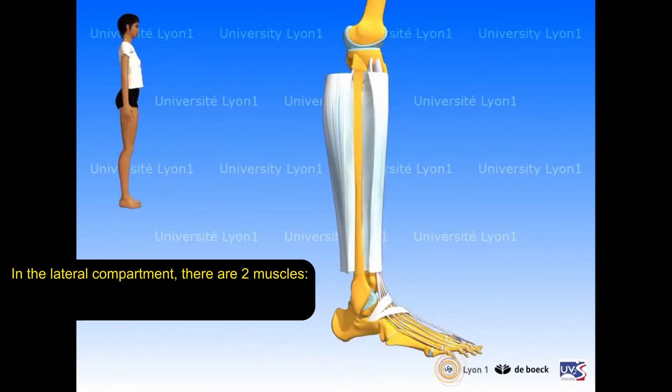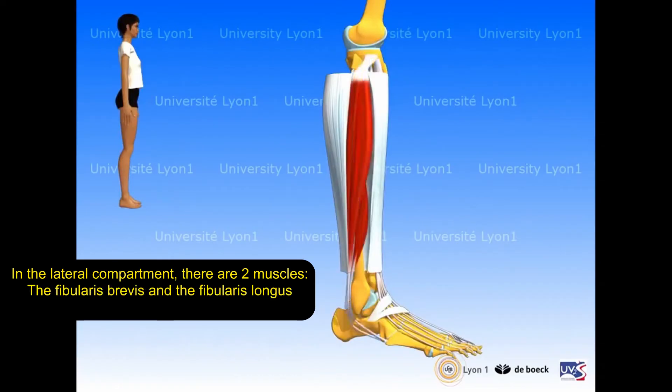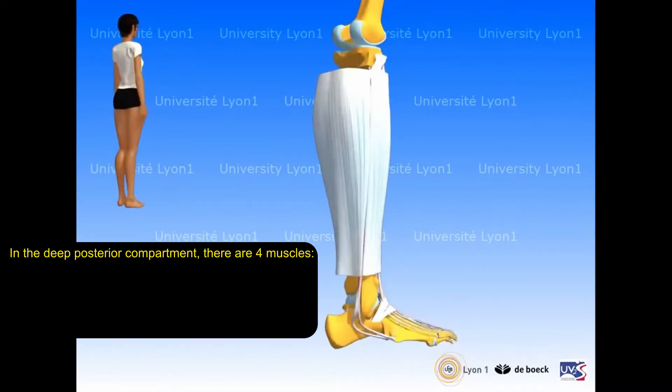In the lateral compartment, there are two muscles: the fibularis brevis and the fibularis longus. Both help maintain the arch of the foot.